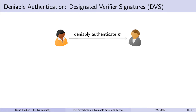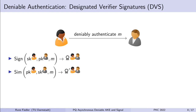How do designated verifier signatures work? Alice sends a message M to Bob in a manner that Bob can be sure the message was sent by Alice; however, he cannot prove this fact to anybody else. Alice signs a message M with her own secret key and designates it to Bob by including Bob's public key in the signing algorithm, resulting in an Alice-to-Bob signature. Similarly, Bob can use the simulation algorithm to create an Alice-to-Bob signature using his own secret key and Alice's public key. DVS schemes also have a property called source hiding, which means it is indistinguishable whether a signature was created using the sign algorithm or the simulate algorithm, even if the attacker knows both secret keys.